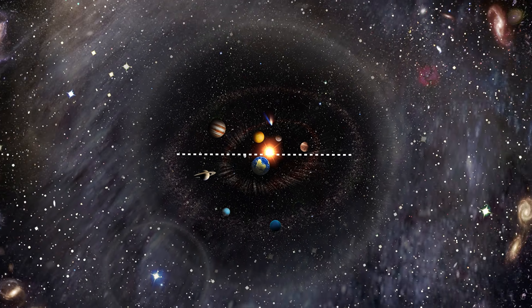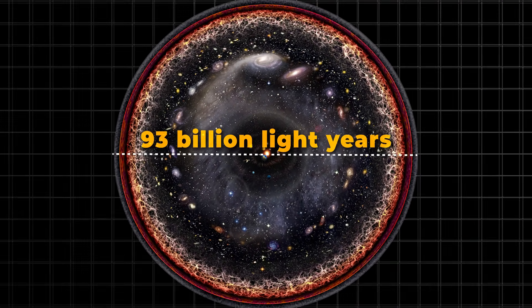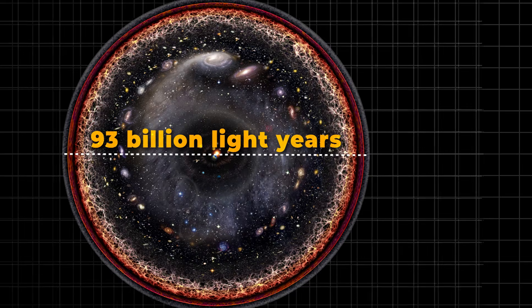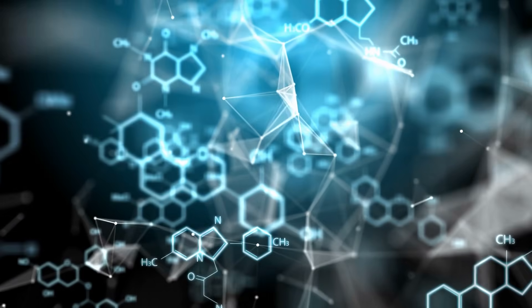In every direction, it forms a perfect cosmic sphere nearly 93 billion light years across. Inside it exists everything humanity has ever observed. Every galaxy. Every star. Every atom we know.